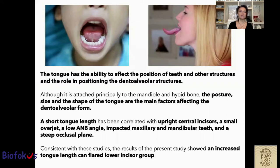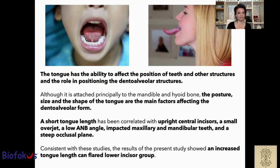Although it is attached principally to the mandible and hyoid bone, the posture, size and shape of the tongue are the main factors affecting the dental alveolar form. A short tongue length has been correlated with upright central incisors, a small overjet, a low ANB angle, impacted maxillary and mandibular teeth, and a steep occlusal plane.